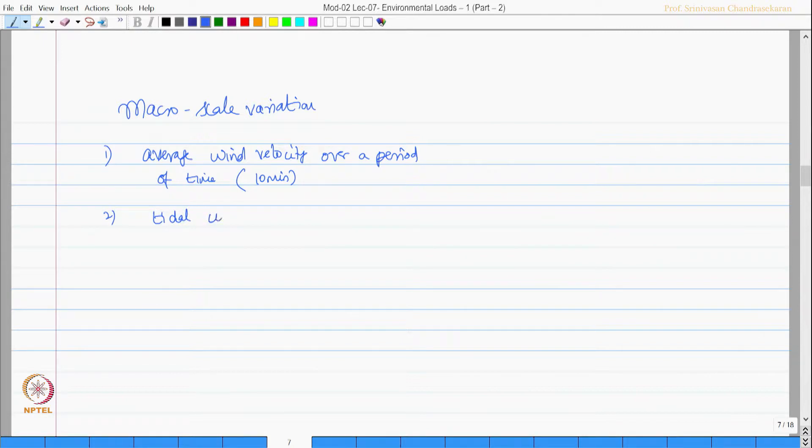Second variation of a tidal current will not cause any major effect in the response. Three, significant wave height and zero crossing or peak periods of the wave spectrum. Fourth can be peak ground acceleration PGA of the earthquake motion. These are some examples of macro scale variation.